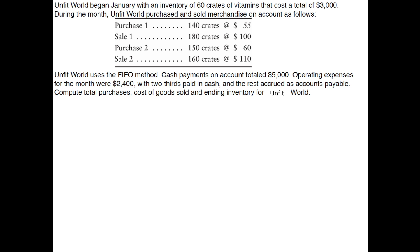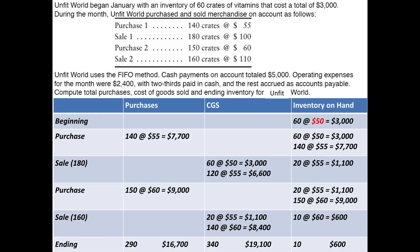The key is to stay organized with your spreadsheet. You should have found that ending inventory is 10 units at $60 each — all from the second purchase — for a total ending inventory of $600. Total cost of goods sold for this period is $19,100, and total purchases are $16,700.